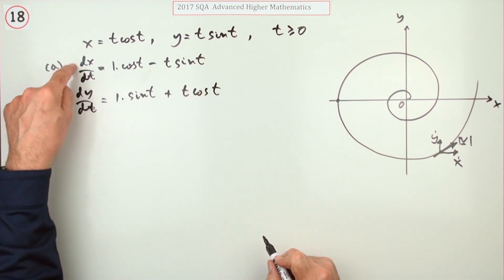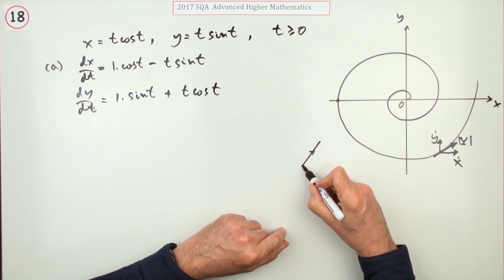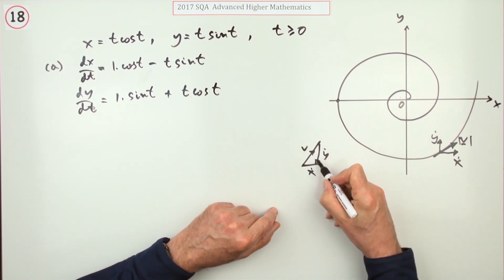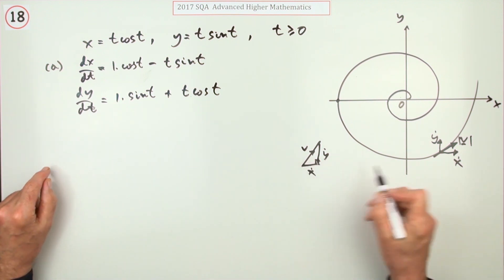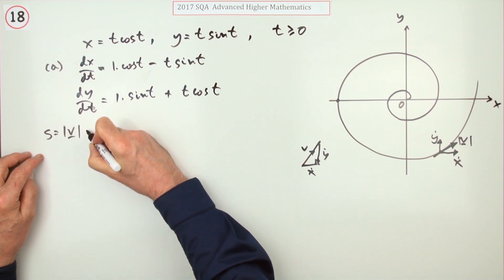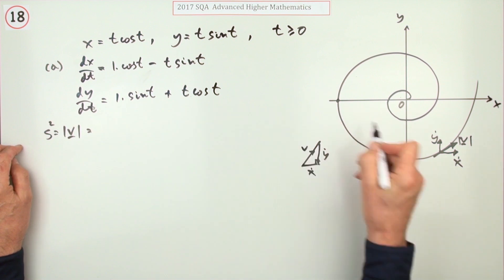These are the two components, which means that the actual velocity is made up of these two parts. That's x dot, that's y dot. So v itself, if you want its magnitude—that's just Pythagoras. The magnitude speed would be the square root. I don't think I want to do square root all the time, so I'll just put square for now.